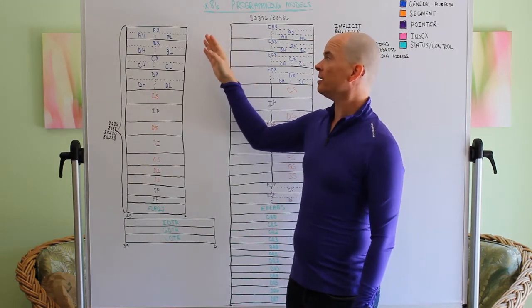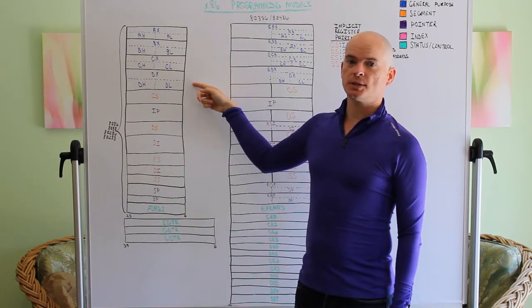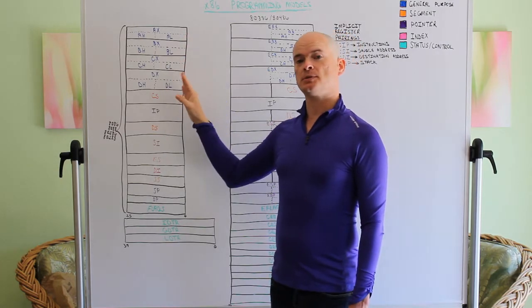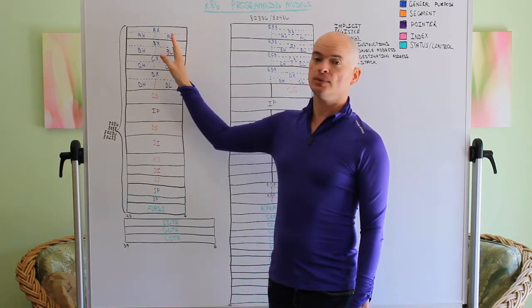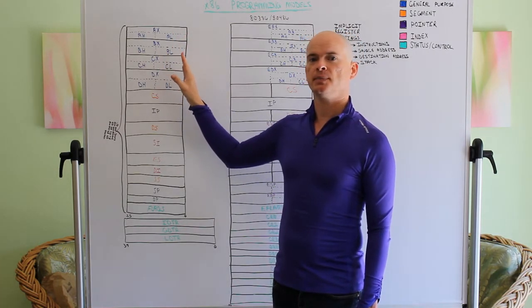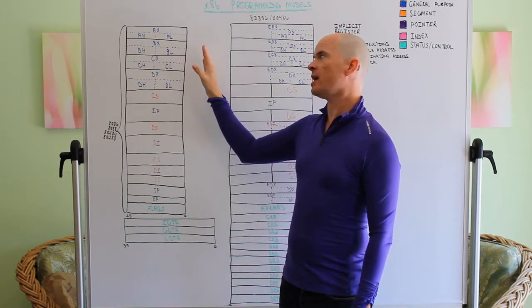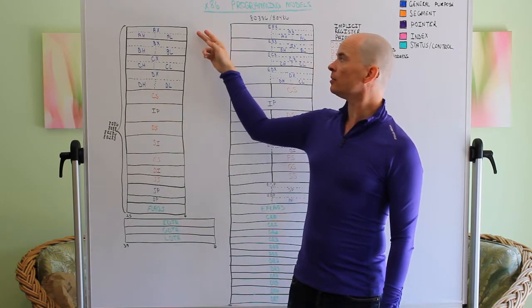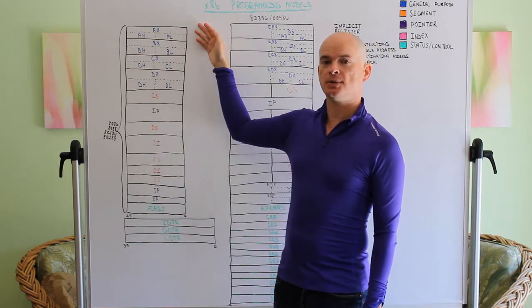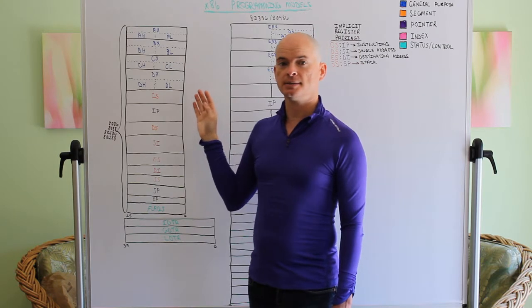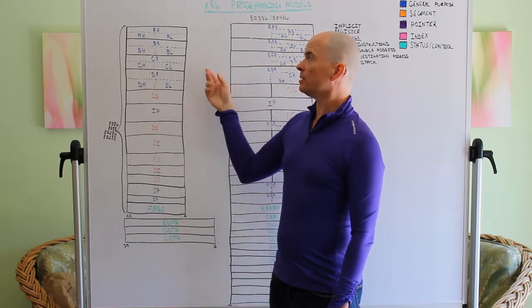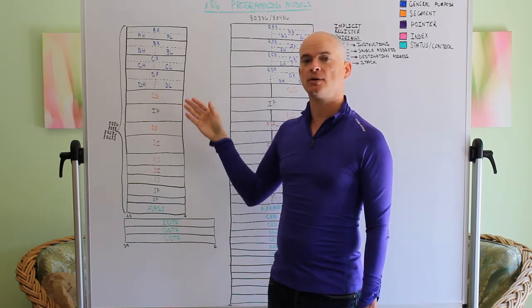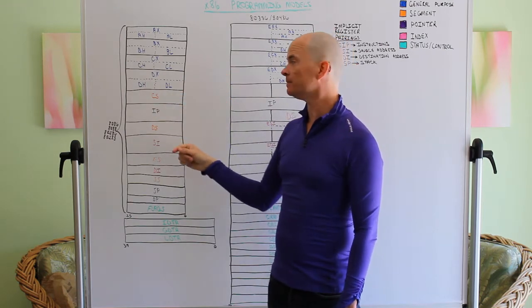we have four general purpose registers and they're 16 bits each. All of those general purpose registers are split in half to give us a total of eight byte-sized registers. The four 16-bit registers are known as AX, BX, CX, and DX, and the eight-bit registers within those are AL, AH, BL, BH, and so on, all the way through DL, DH.